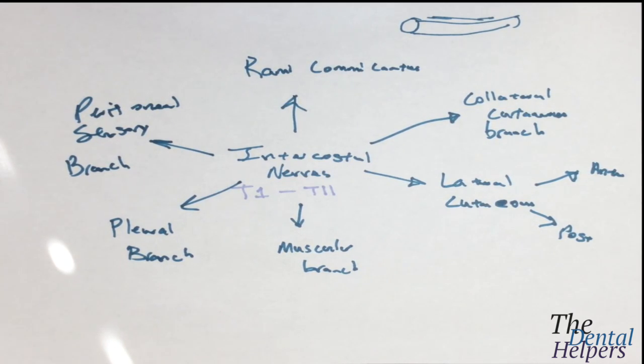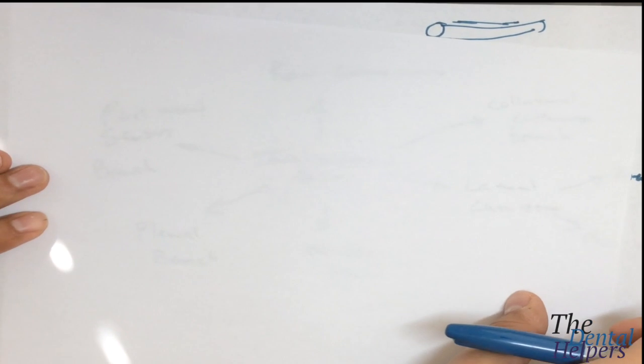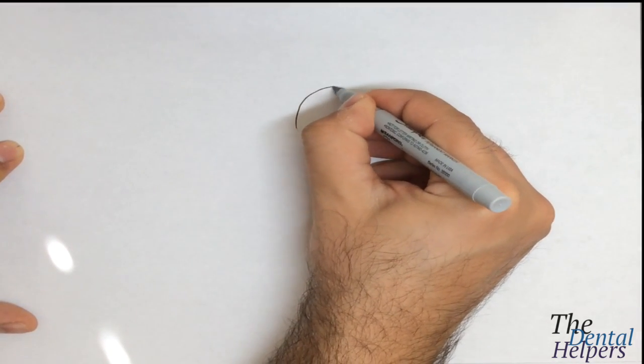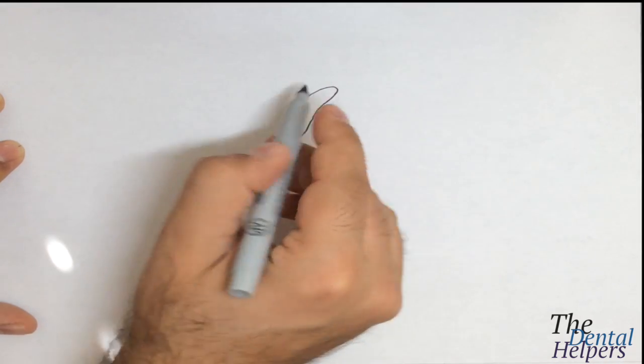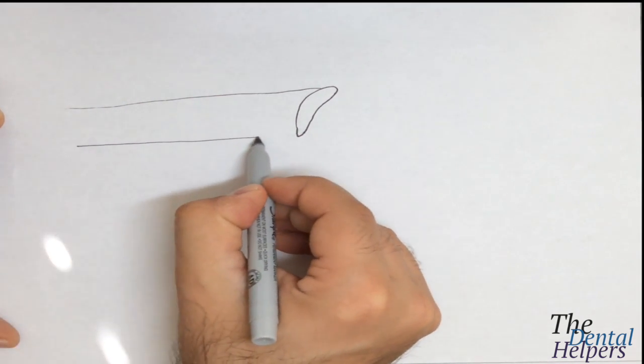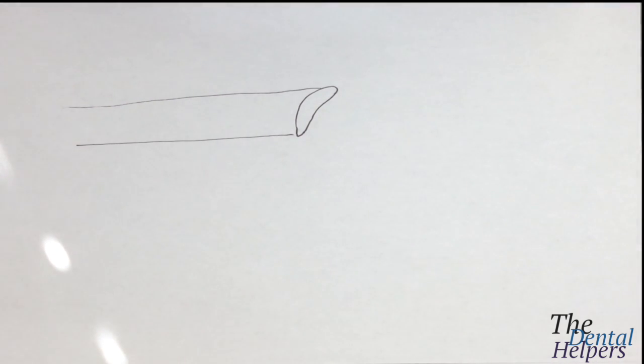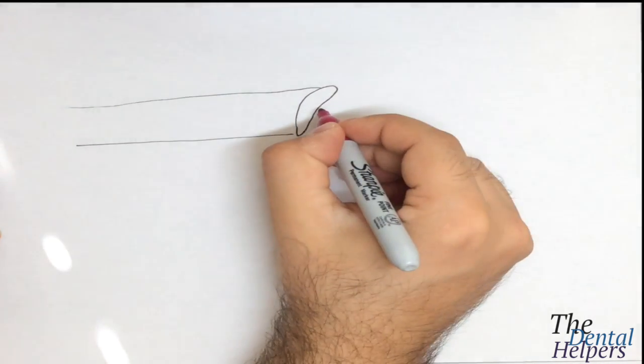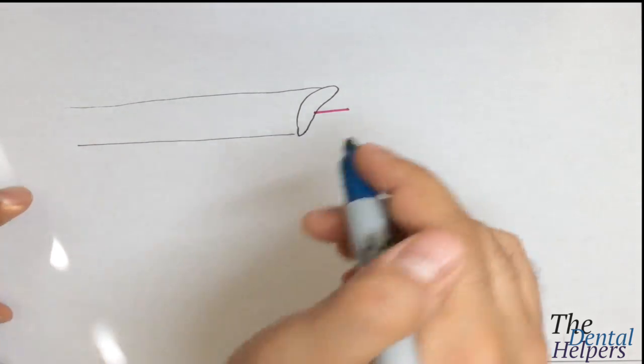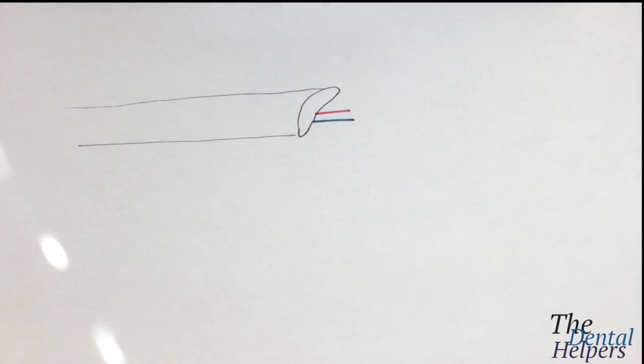Looking at how the vasculature and innervation look in terms of the rib, imagine this is an individual rib. The intercostal has an artery, a vein, and a nerve.